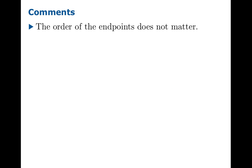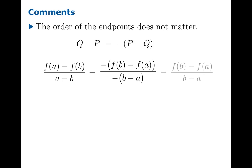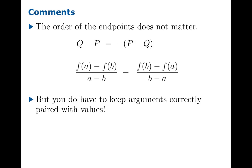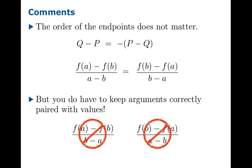A couple of comments are in order. The order in which you use the endpoints does not matter. This is a consequence of the fact that when you take two numbers and subtract them in the other order, you're just introducing a sign change. If you attempt to calculate f of a minus f of b over a minus b, you could rewrite both the numerator and the denominator, and the negative ones cancel. What does matter is that you keep the arguments and values correctly paired, so you can't mismatch a and b.